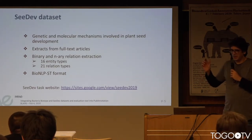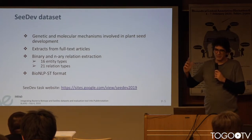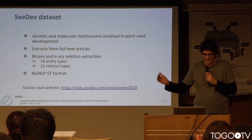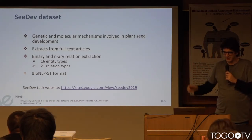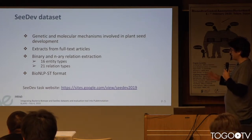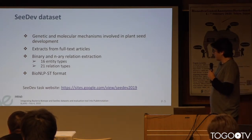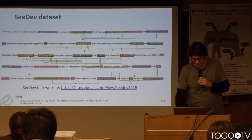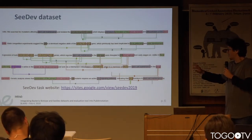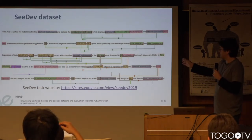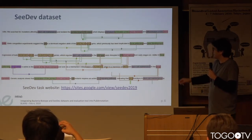Plant seed development is very important for the study and improvement of crops, their resistance, and their efficiency. We have annotated extracts from scientific text articles. This is a very complex annotation with 16 entity types and more than 20 relation types — the annotation is really dense. We have genes, proteins, anatomy parts of plants, and so on.